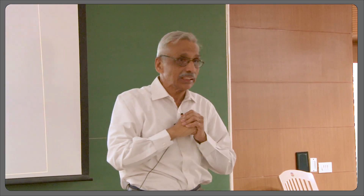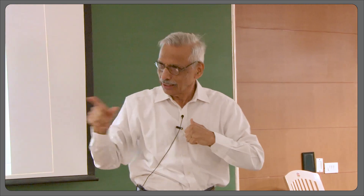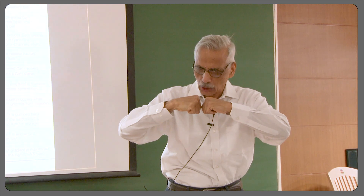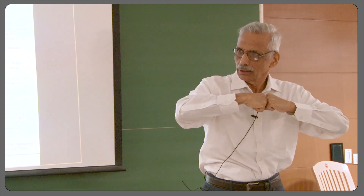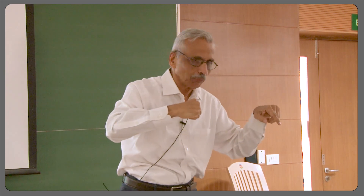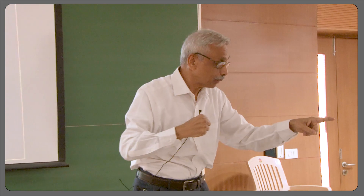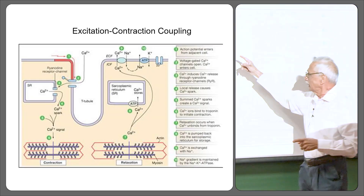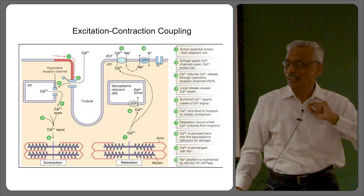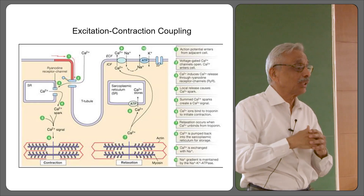This ryanodine receptor 2 is interesting. In skeletal muscle, DHPR in the plasma membrane and RYR1 in the sarcoplasmic reticulum are mechanically linked — a voltage change in DHPR mechanically opens RYR1, releasing calcium from the SR into the cytosol. Here in cardiac muscle, it is not a mechanical phenomenon. Instead, the calcium ions that enter the cytosol chemically stimulate RYR2, and as a result RYR2 opens, releasing a large number of calcium ions stored in the sarcoplasmic reticulum into the cytosol.